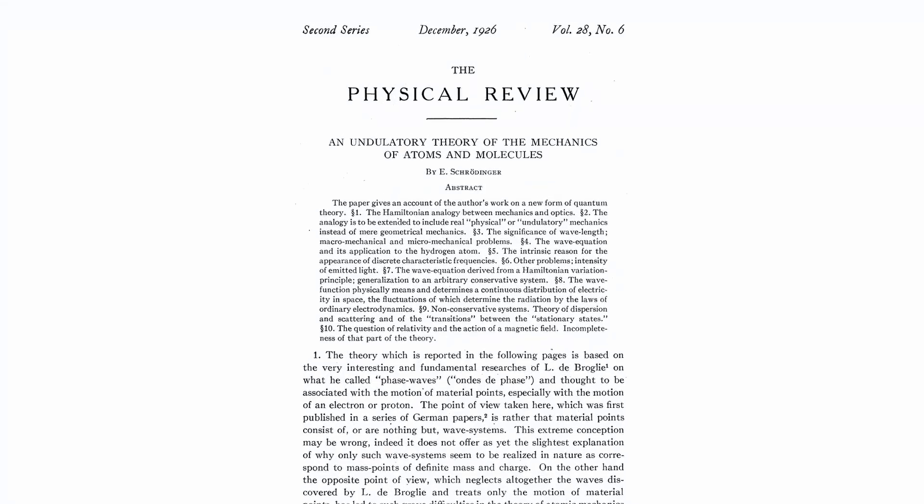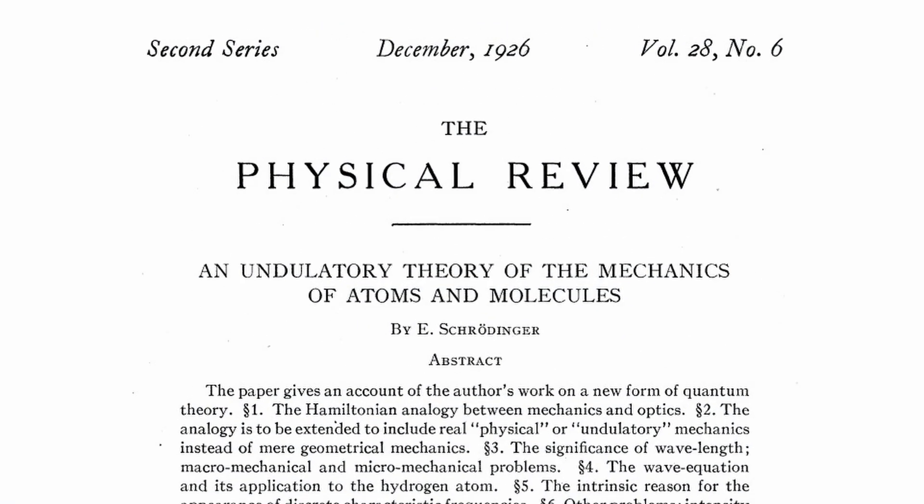And so in 1926, just two short years after De Broglie published his thesis, Erwin Schrödinger published his now famous wave equation. The Schrödinger equation describes how the wave function of a physical system evolves in time and now provides a foundation for quantum mechanics.